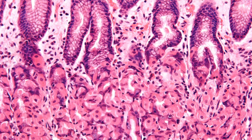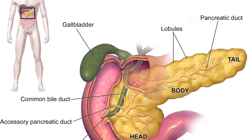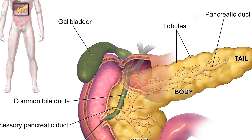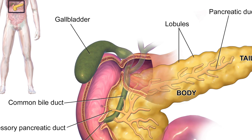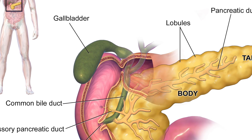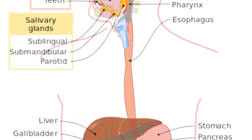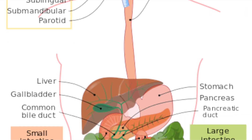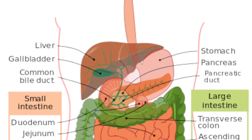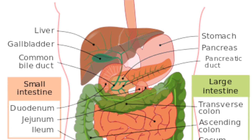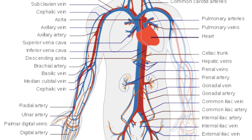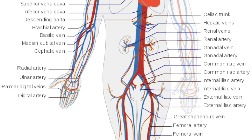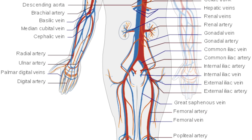The pancreas is also an organ which makes hormones to control blood sugar and makes some of the enzymes to digest our food. Different organs are combined in organ systems to carry out the major functions in the body — for example the digestive system, the circulatory system and the gas exchange system.